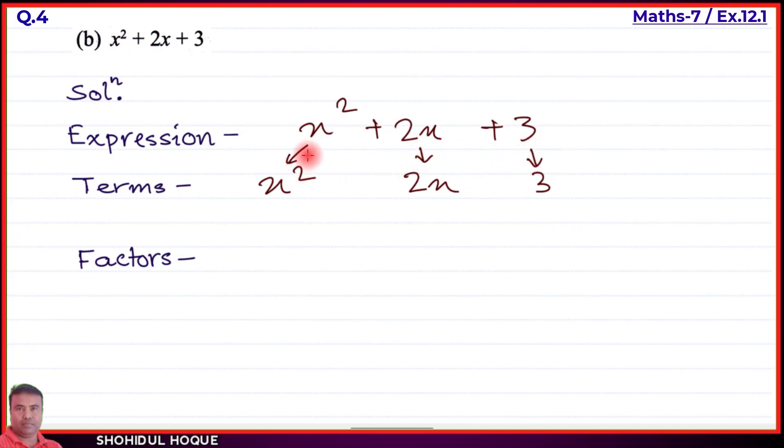For the terms and factors: x² has two factors which are x and x. For 2x, the term has two factors: 2 and x.